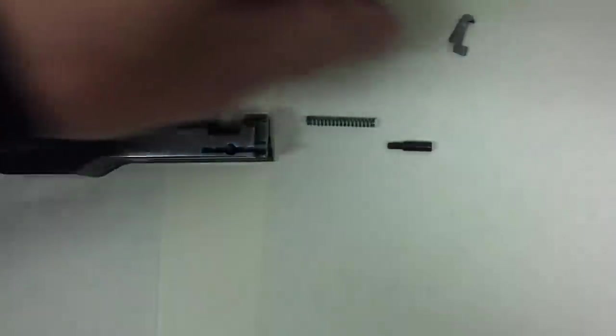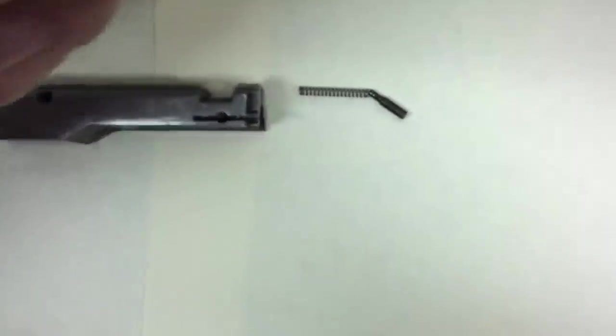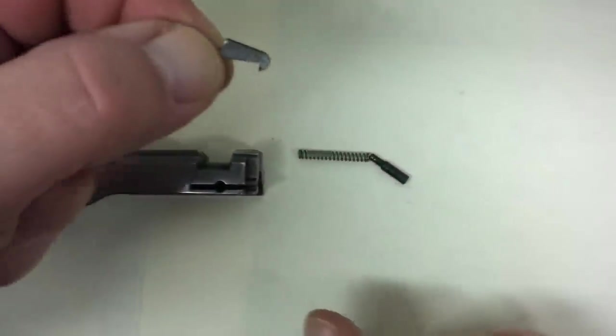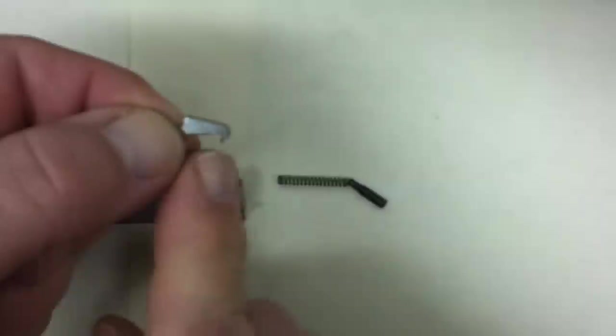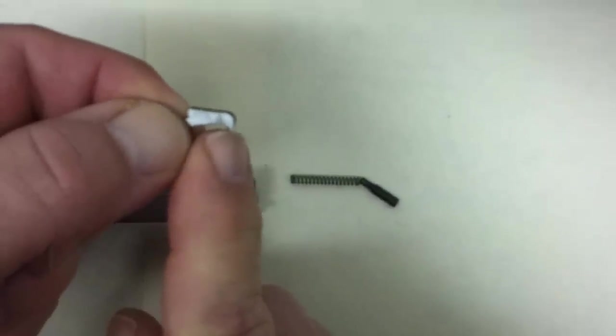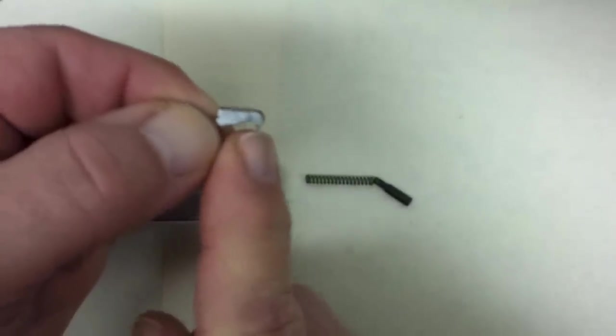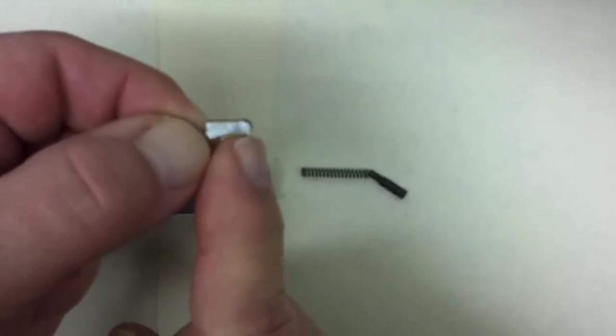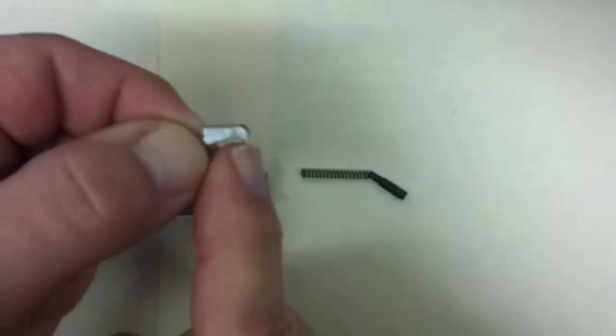A lot of people want to buy upgraded extractors, and it's a good idea because the OEM one is made of a piece of stamped steel that's fairly soft, and that point, which is supposed to catch and hold onto the case rim, can get dull with use. And when it gets dull, you're going to have a lot of failures to extract, or you're going to get a lot of stove pipes.